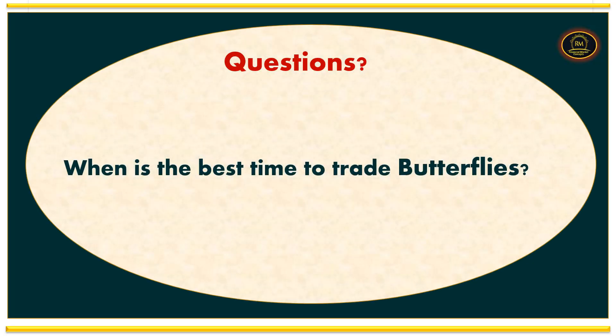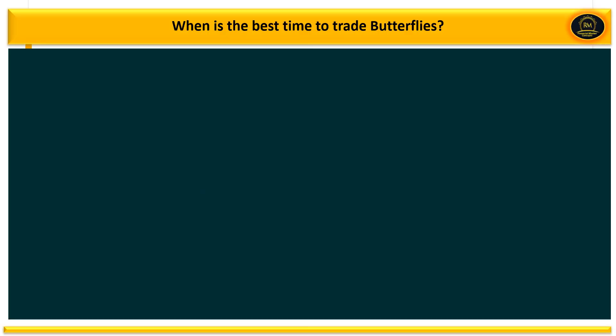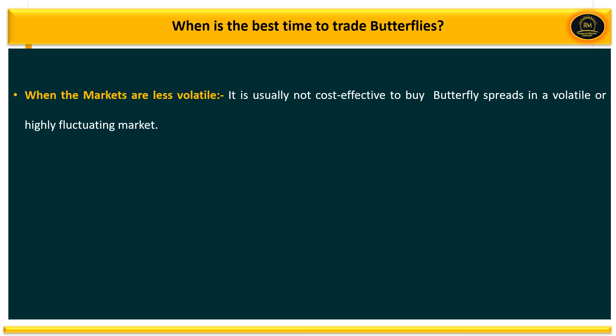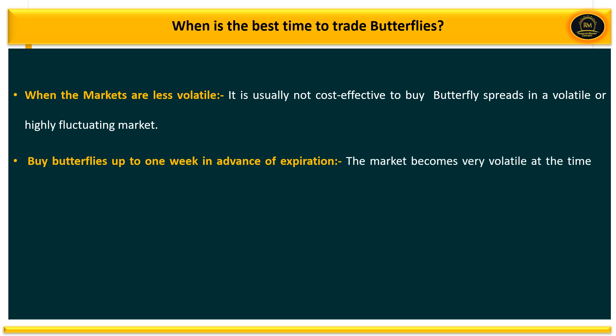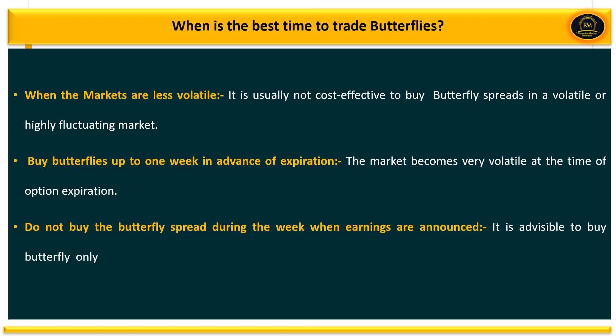What is the best time to trade butterfly? It is always advisable to buy butterfly when the market is less volatile, because it is usually not cost-effective in a highly volatile market with high fluctuating prices. Buy butterfly up to one week in advance of expiration, because the market witnesses high volatility at expiration, and close positions within a day or two of expiration. Also, do not buy butterfly spread during the week when earnings are announced, as stocks become very volatile at earnings time. It is advisable to buy butterfly only between earning announcements.